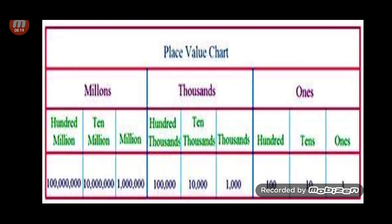Ones, tens, and hundreds — no change, same as before. Then thousand and ten thousand — same. But in the international system we will also have hundred thousand. Where in the Indian system we had lakhs, here we have hundred thousand. Where we had crores, here we have millions. Then ten millions, then hundred millions. Afterwards we have billions and ten billions.